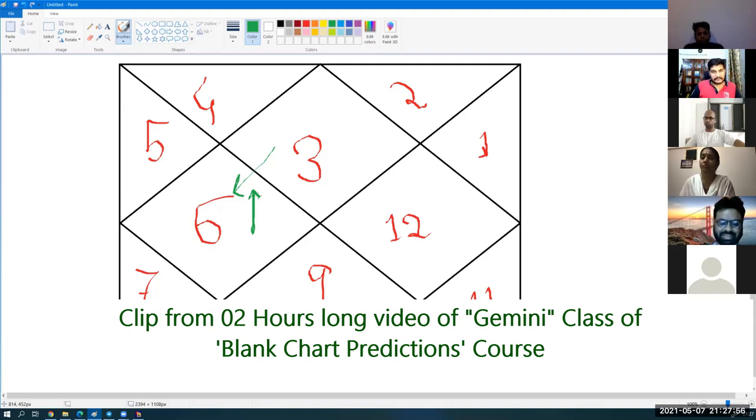What does fourth house indicate? Mother. So, this person is very connected to mother also.